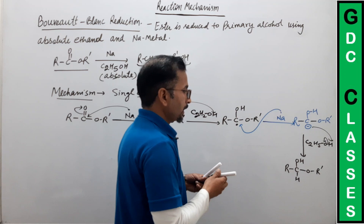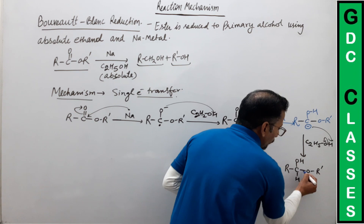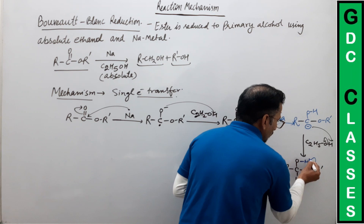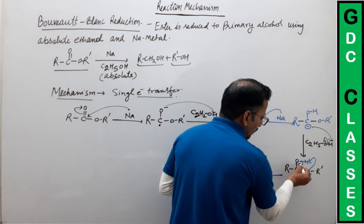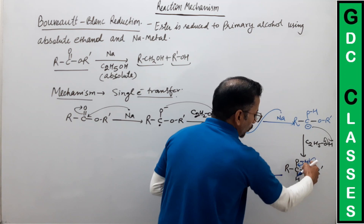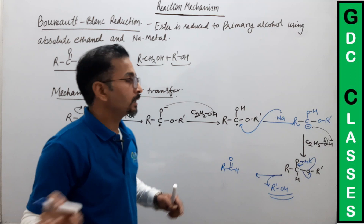In the next step, यहां से यह bond टूट कर इस oxygen पर जाएगा और यह oxygen इस hydrogen को pick करेगा। This hydrogen is picked up by this oxygen and this bond shifts here. Product बना: R-C-O-H, और यहां से निकल चुका है R'-O-H। तो एक primary alcohol यहां इस step पर निकल चुका है।